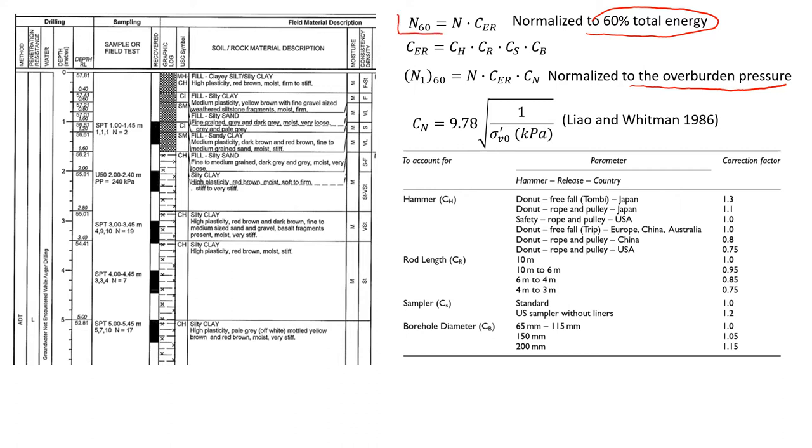So to do that, we're going to use this relationship. This is the formula to normalize it for 60% of total energy that we use in this test. You will see that there are a few correction factors: CH, CR, CS, and CB. They're all given in this table. These are correction factors for hammer, for length of rods, for sampler, and for borehole diameter.